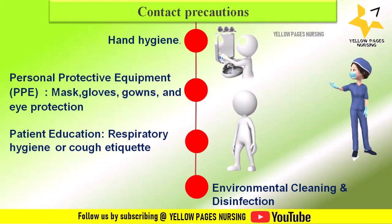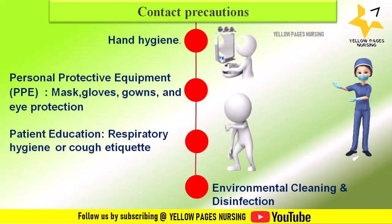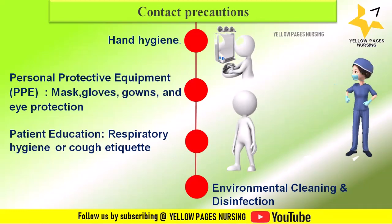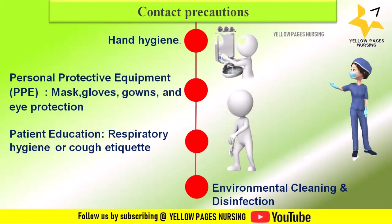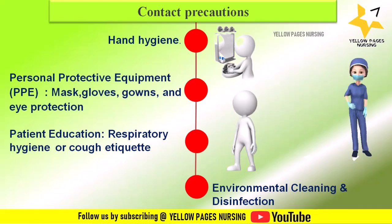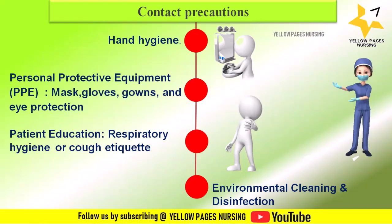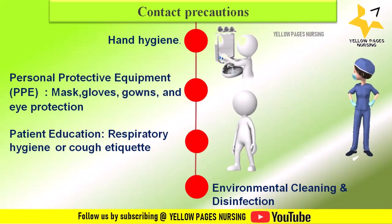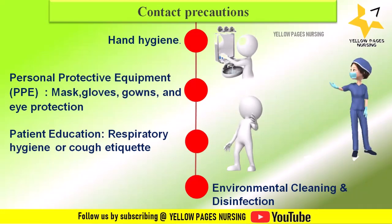Gowns are worn to protect clothing and skin from contact with potentially infectious materials. Nurses should wear gowns when there is a risk of splashes or contamination of clothing with bodily fluids. Depending on the specific situation and infectious agents involved, nurses may also need to wear masks and eye protection such as goggles or face shields to protect against respiratory droplets or splashes.